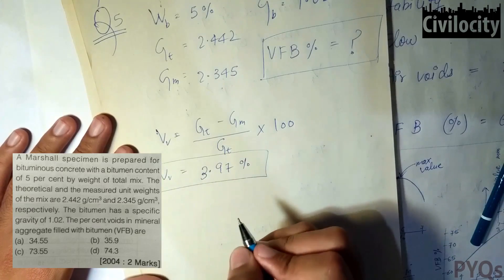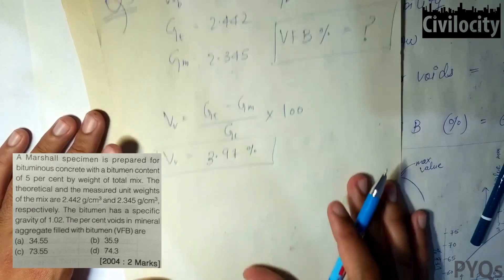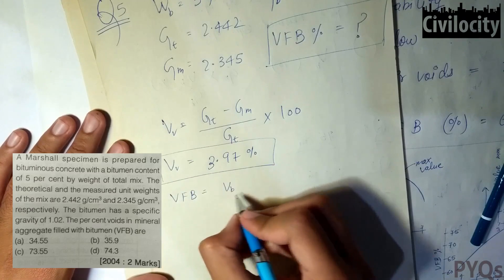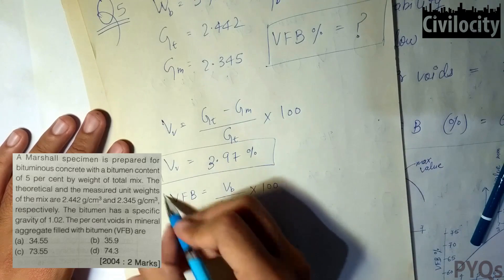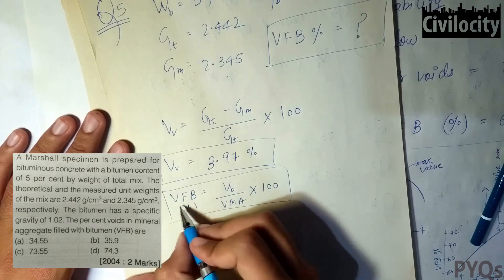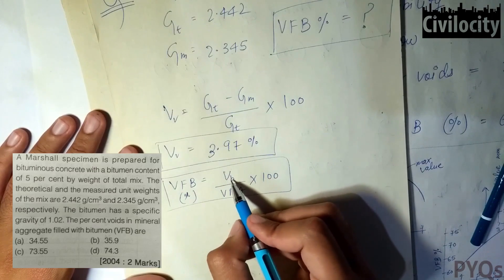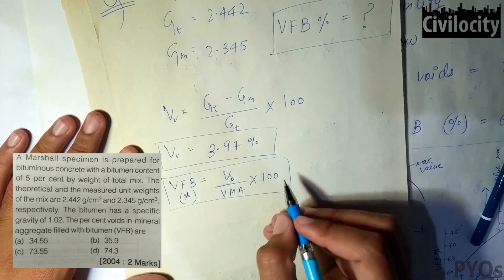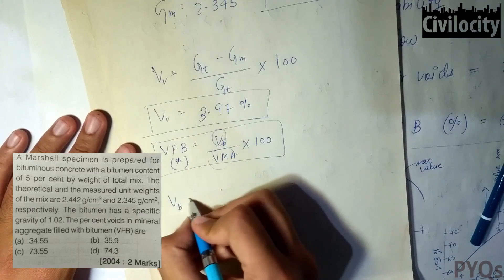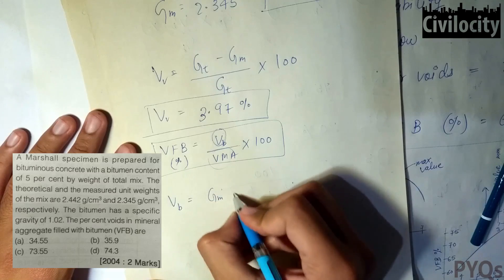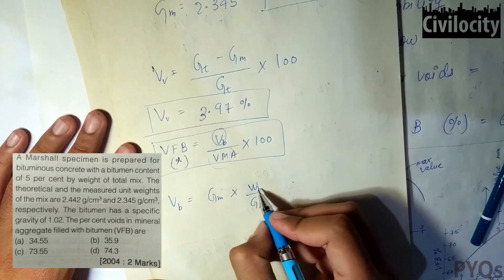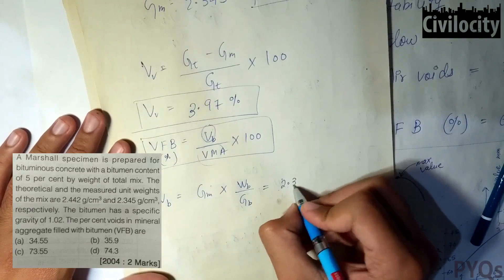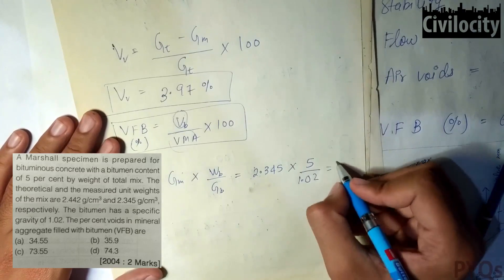Now to find the percent voids filled with bitumen (VFB), we use VFB = VB divided by VMA into 100. First find VB using the formula: Gm into Wb divided by Gb. Substituting the values gives VB = 11.5%.